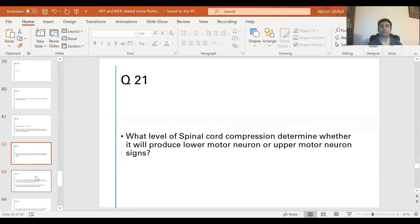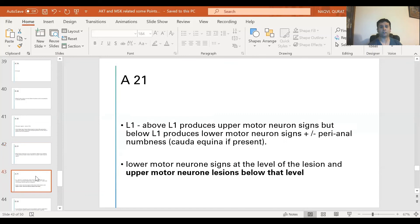Question 21: What level of spinal cord compression determines whether it will produce lower motor neuron or upper motor neuron signs? This is important because there are two different answers. One is L1 level: above L1 produces upper motor neuron signs, but below L1 produces lower motor neuron signs with or without perianal numbness, which is called cauda equina. The other answer is lower motor neuron signs happen at the level of lesion, but upper motor neuron signs occur below that level.